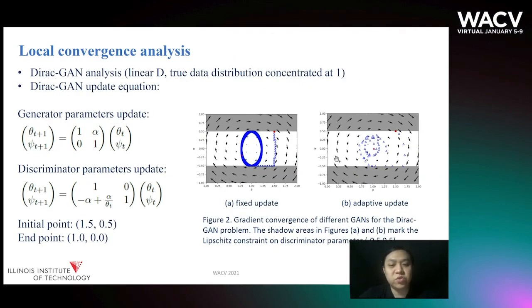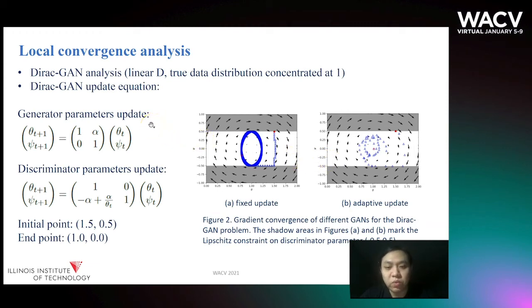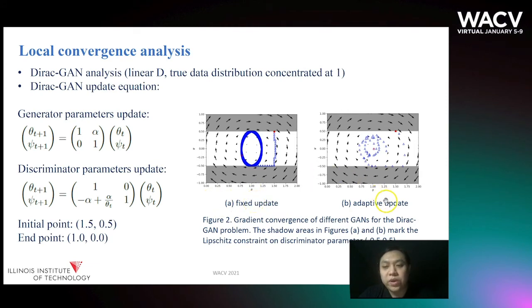Next, we demonstrate our method can reach local convergence for a derived GAN. The derived GAN consists of a generator distribution and a linear discriminator. The true data distribution is given by a Dirac distribution concentrated at one. Here we give the generator and discriminator parameter update rules. We define the initial point as (1.5, 0.5) and the convergence point should be (1, 0). As we can see in Figure 2, the original WGAN will be in an infinite loop. However, with our adaptive update, we can reach local convergence.